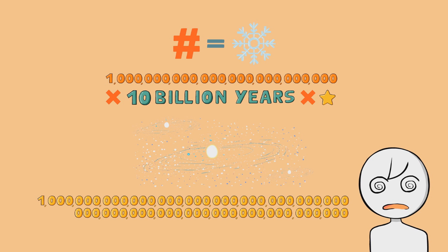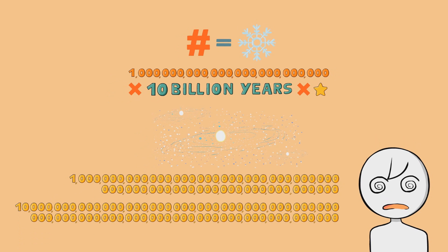To put that into perspective, the number of atoms in the entire universe is only about 10 to the 79th. Well, that's a big number. Surely that would mean there are trillions of snowflakes exactly alike. Surprisingly, no.